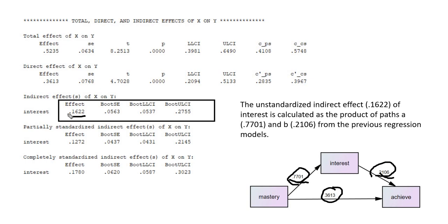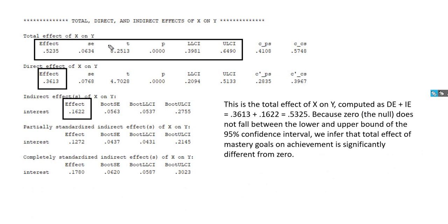When we substitute those values into our path diagram, we can see path A, path B, and path C. The indirect effect is calculated as the product of paths A and B. We test this indirect effect using bootstrap confidence intervals: if 0 falls between the lower and upper bound, we maintain the null; if 0 falls outside that interval, the indirect effect is significantly different from 0 — which is the case in our example. The total effect of X on Y is calculated by summing the indirect effect and the direct effect.